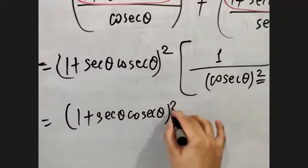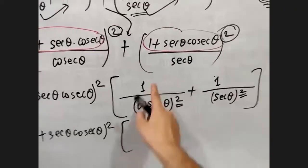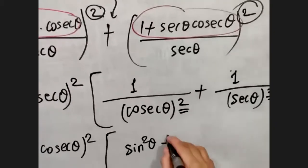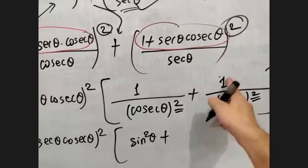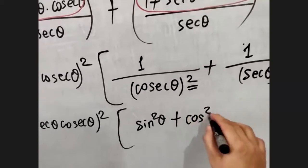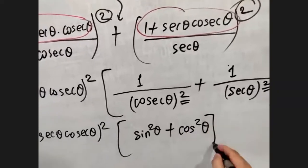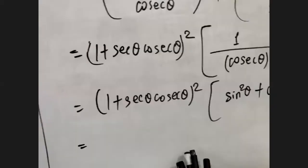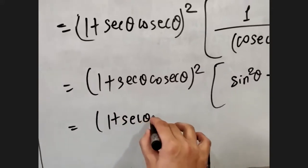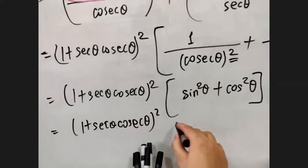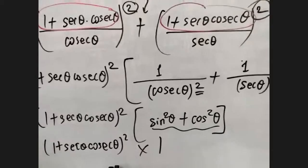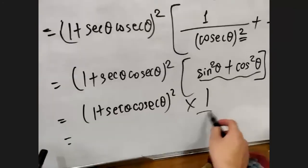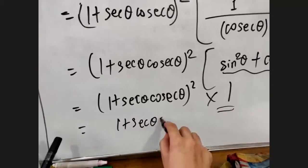Now copy this as it is: (1 + sec θ · cosec θ) all square. In the bracket, one by cosec is sine, so it becomes sine²θ, and one by sec is cos, so it becomes cos²θ. Now sine²θ + cos²θ equals one, so the bracket simplifies to one. Finally, (1 + sec θ · cosec θ)² multiplied by one gives (1 + sec θ · cosec θ)², which is our right-hand side.